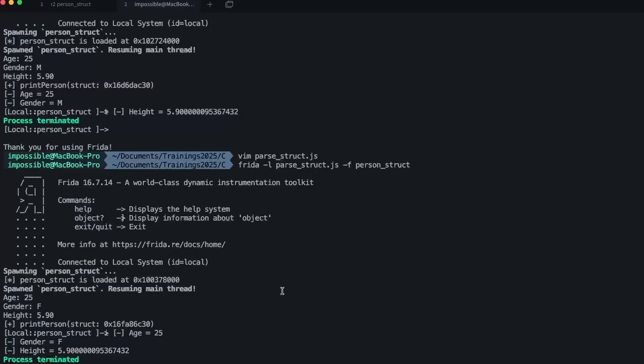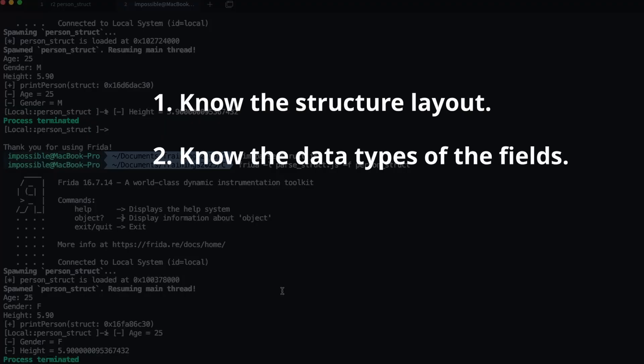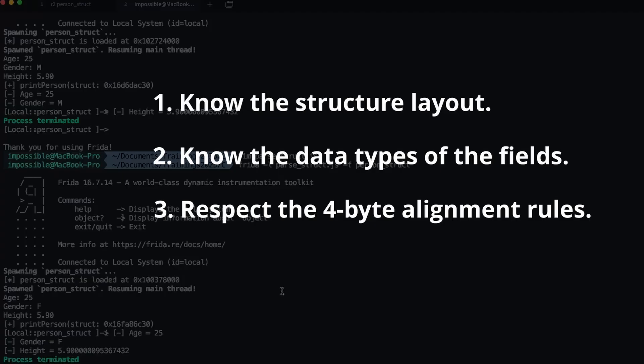Before ending the video, let me quickly recap what to keep in mind when parsing a structure in memory. First, know the structure layout. Second, know the data types of each field — in this case, integer age, character gender, and float height. Third and most important: respect the alignment rules. In 64-bit operating systems, memory is mostly 4-byte aligned. If you found this helpful, consider dropping a like and subscribing for more reverse engineering and memory hacking content. See you in the next one.